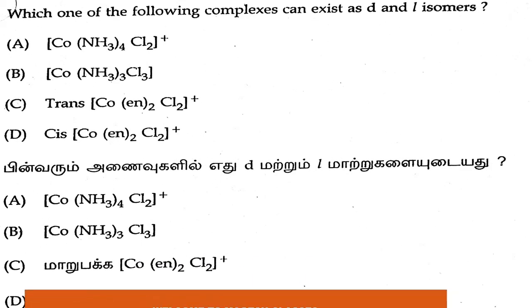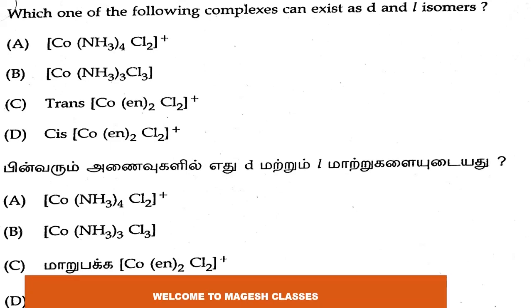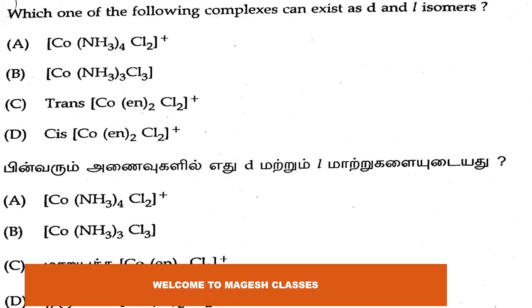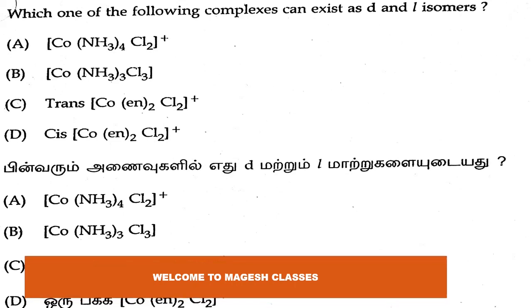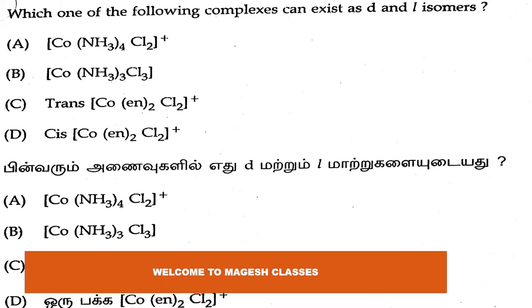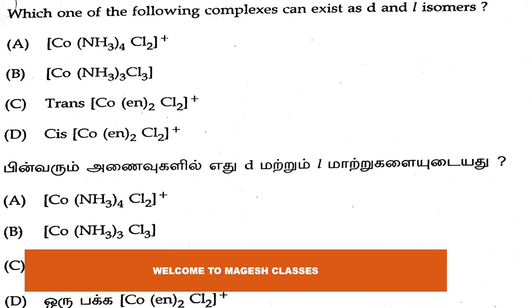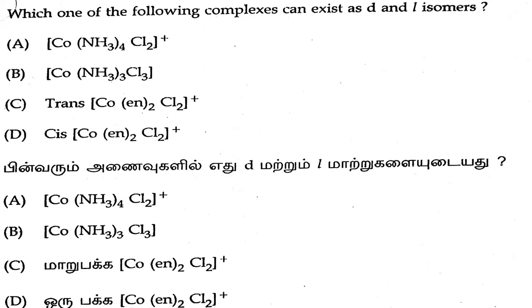Hello viewers, welcome to my guest classes. In this presentation, we are going to discuss the TRB 2017 questions asked in coordination chemistry. Which one of the following complexes can exist as d and l isomers?